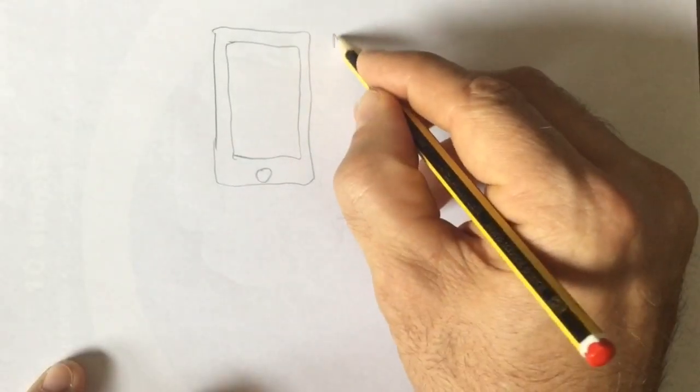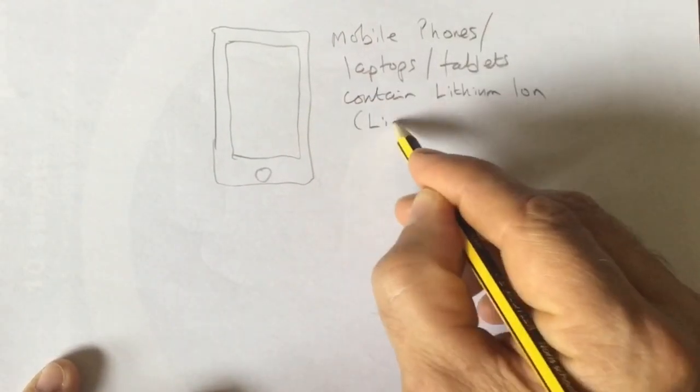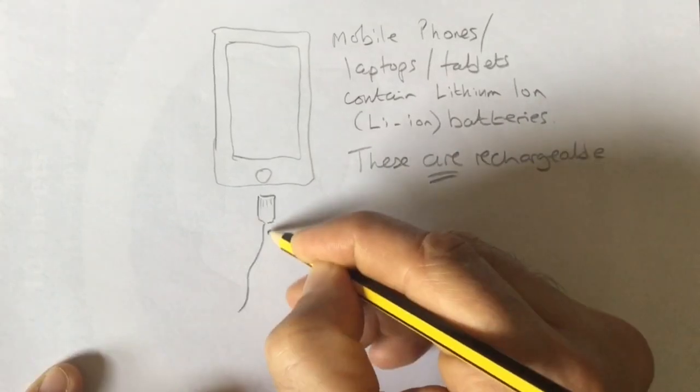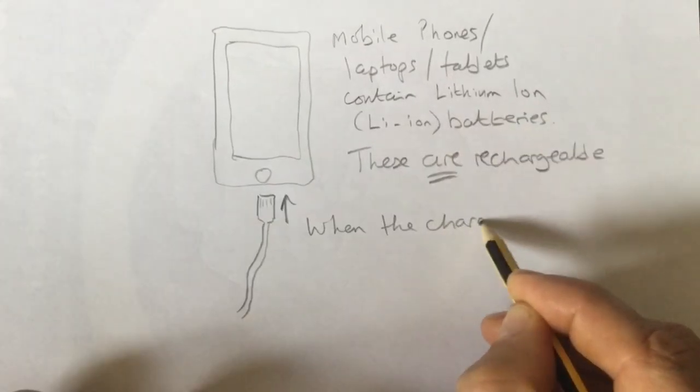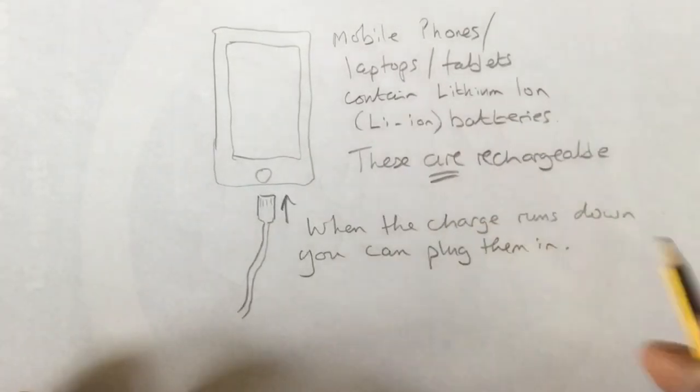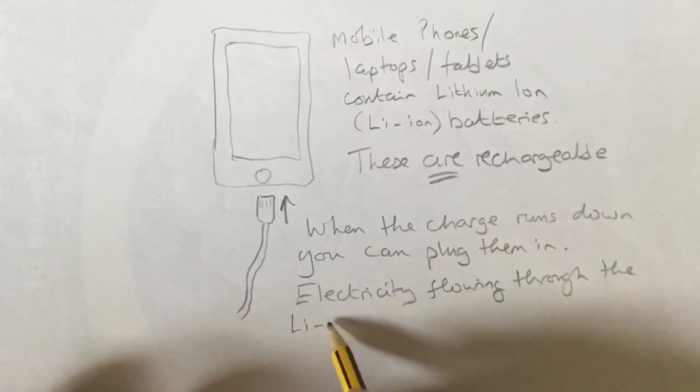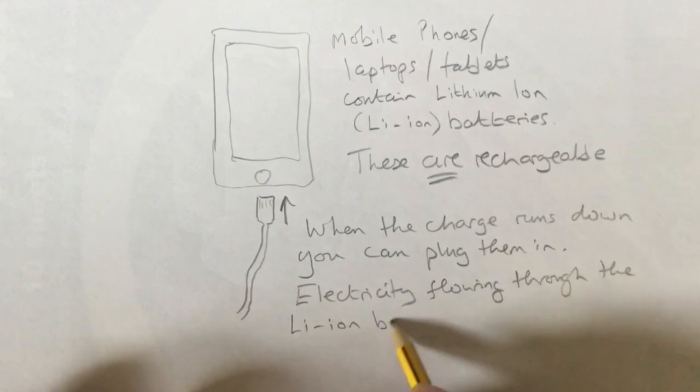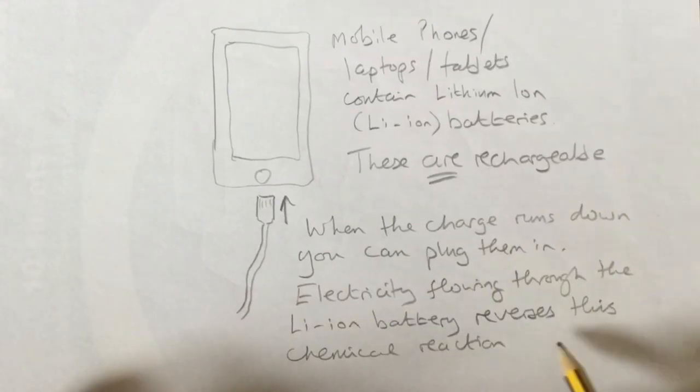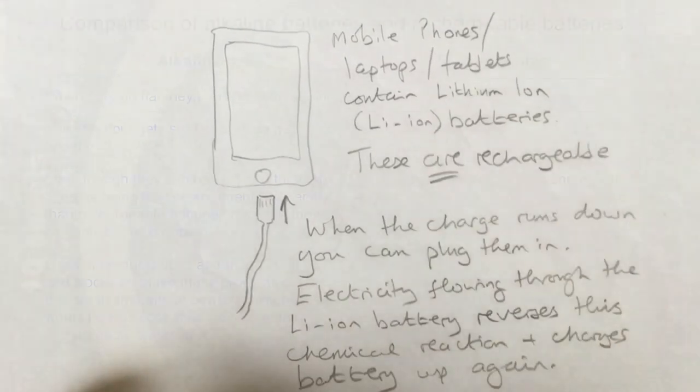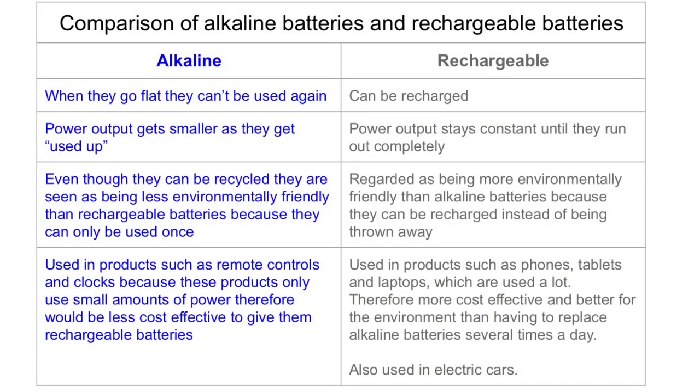In today's society we use devices like mobile phones, tablets, and laptops an awful lot, and this is why they need rechargeable batteries. The most common one being something called a lithium-ion battery. When the charge runs down on these you can plug them in, electricity flows around them, and it reverses that chemical reaction, meaning that they can be recharged. And I've put together a comparison of alkaline and rechargeable batteries for you, so I suggest you pause it and have a read.